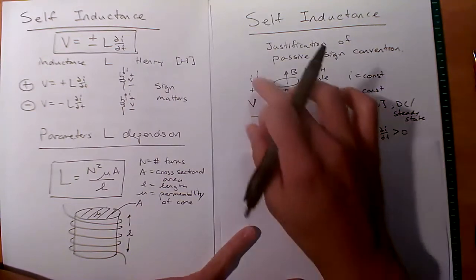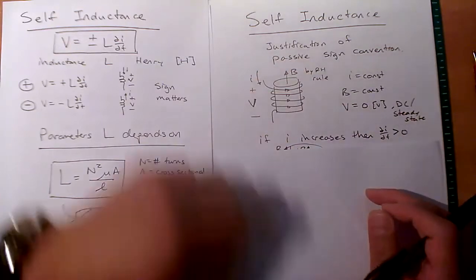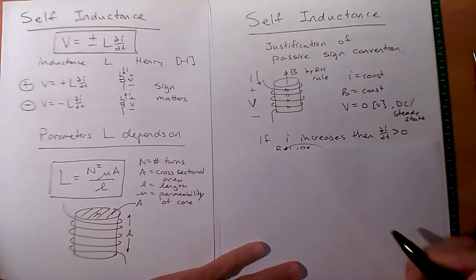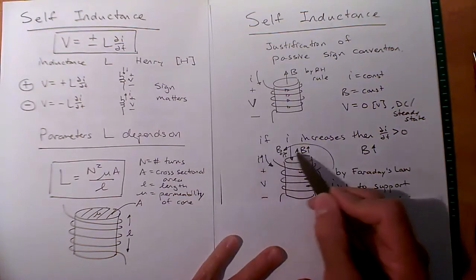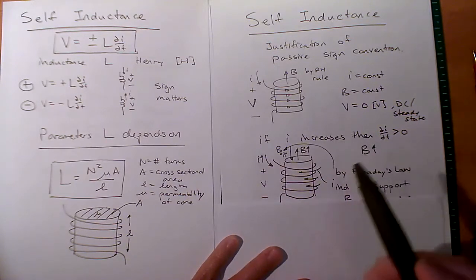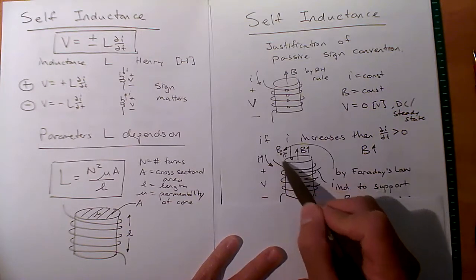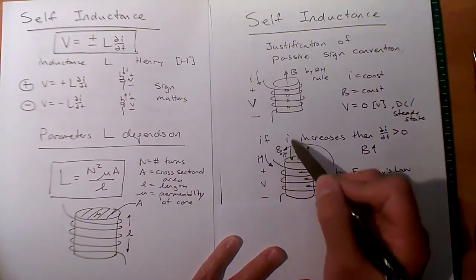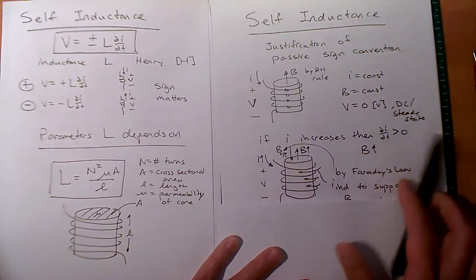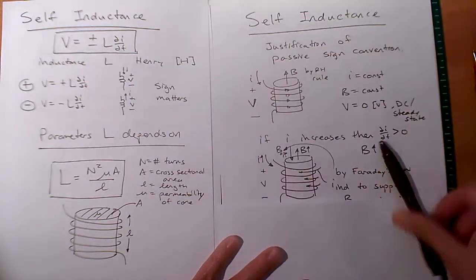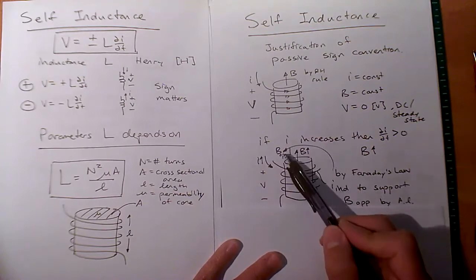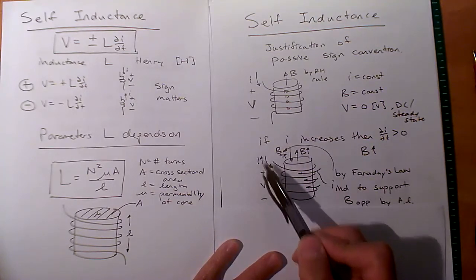If this I goes up, this B wants to go up too. Recall from Faraday's law and Lenz's law — it does not like that change. Faraday's law and Lenz's law induce a B_opposed in the opposite direction, fighting this increase in B. And to support that B_opposed, Ampere's law kicks in to create a current going the other way. Notice this induced current is in the opposite direction of the increasing I. The I_induced is always in a direction that opposes whatever caused the change in the first place.